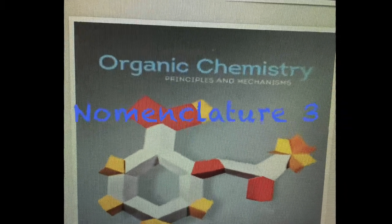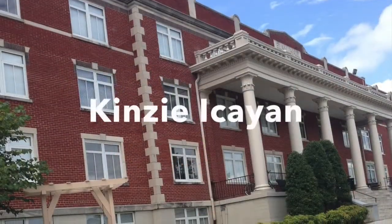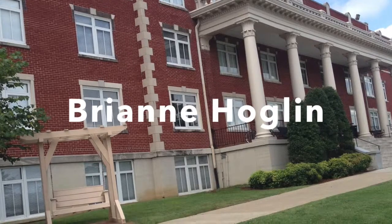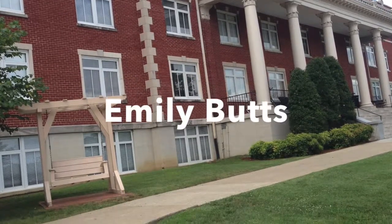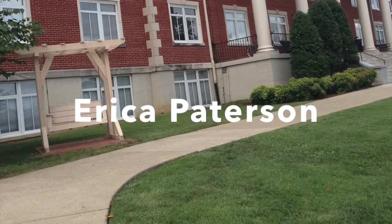Hi, our group is doing a nomenclature chapter 3 and we're going to be going over the Cahn-Ingold-Prelog convention, including the R and S designations, Fischer projections, R and S designations used to determine enantiomers or diastereomers, and the Z/E system.